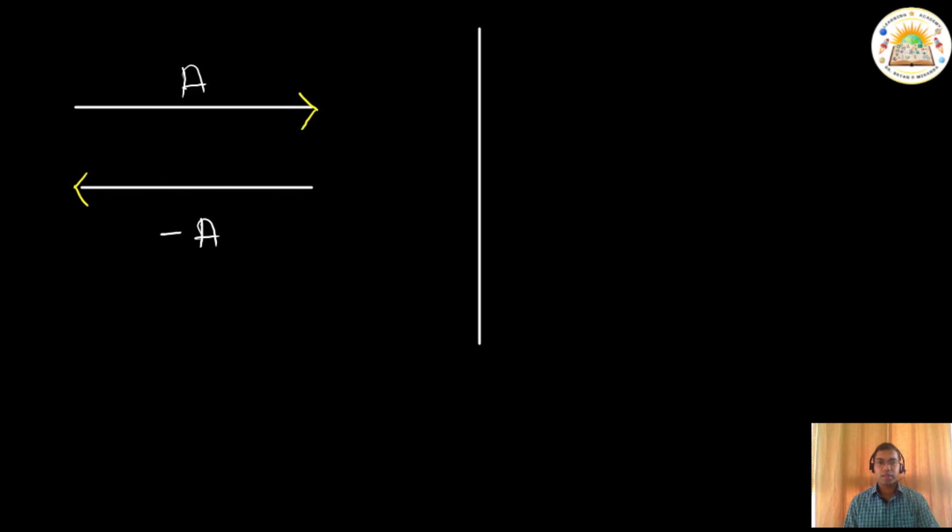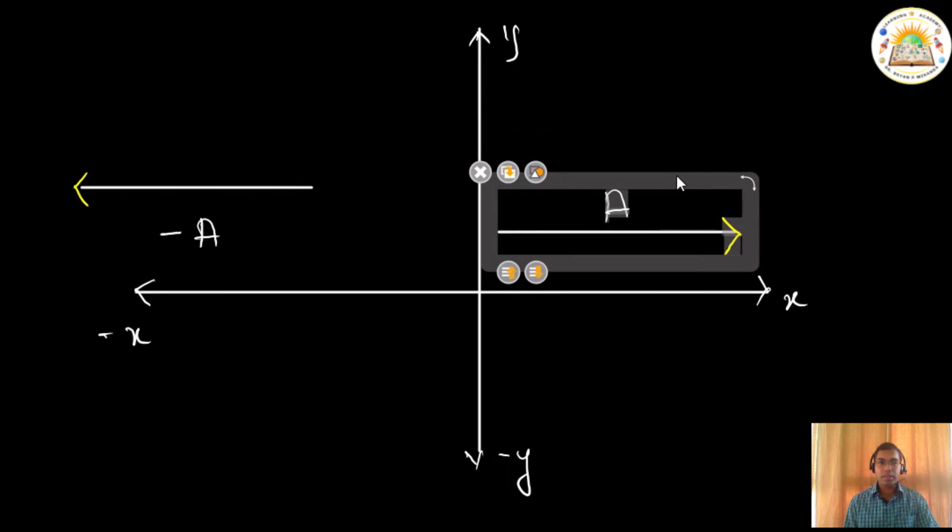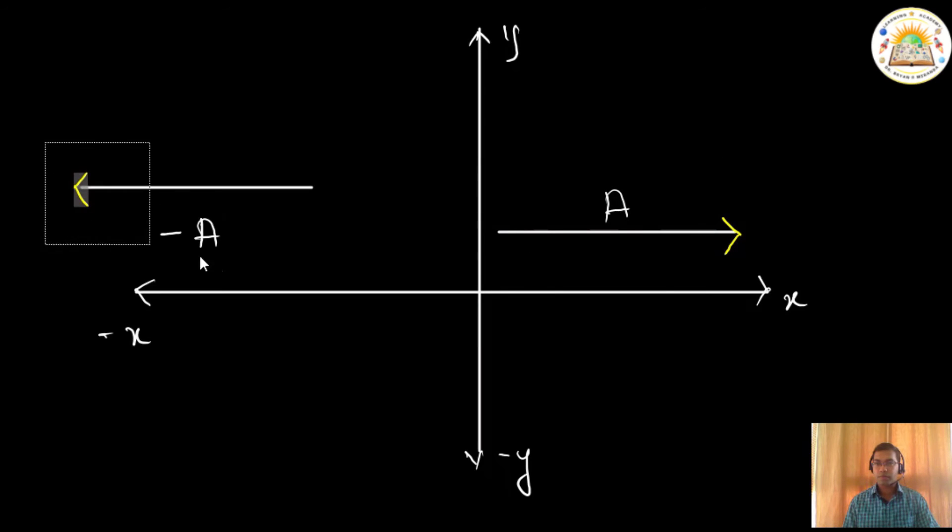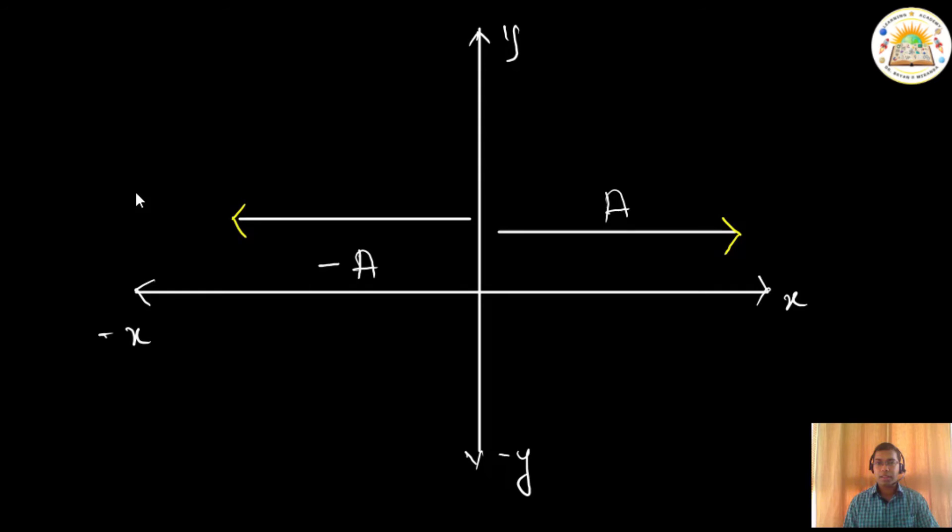If I take a number line, which is a regular number line that you would have done in your school, you have got x-axis, minus x, you have got y-axis and minus y. I will explain the concept for the x-axis and the same is applicable even for the y-axis. If I take this a vector and if I am placing it like this, that is along the positive x-axis, then my negative a is pointing in the negative x-axis. It has the same magnitude.